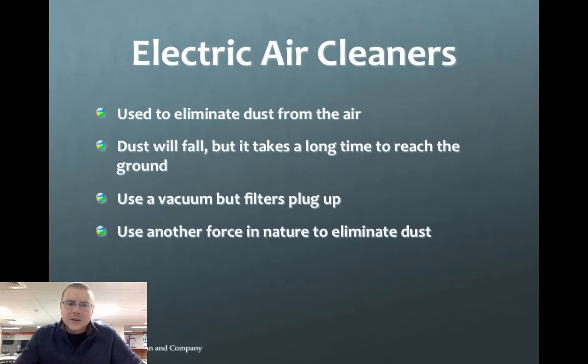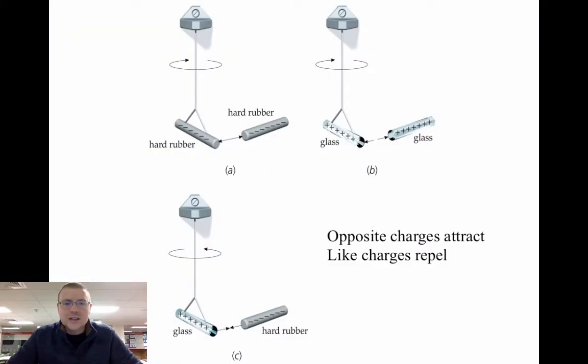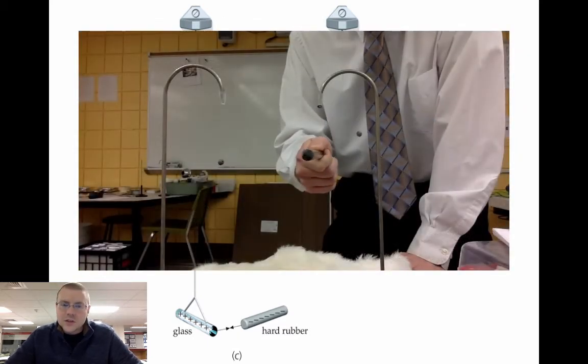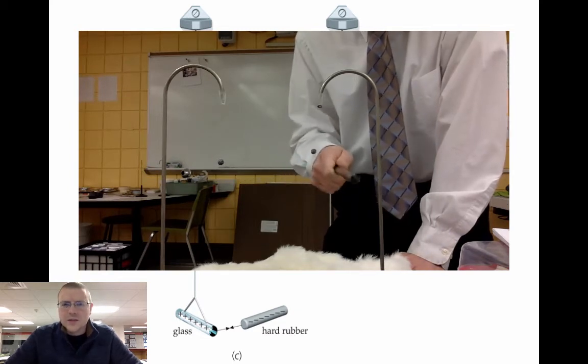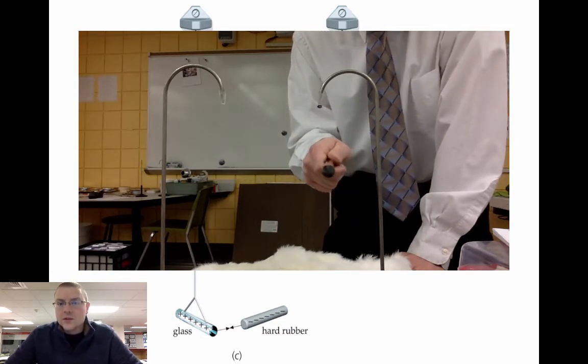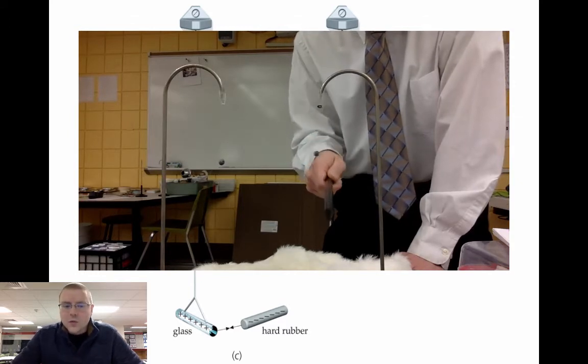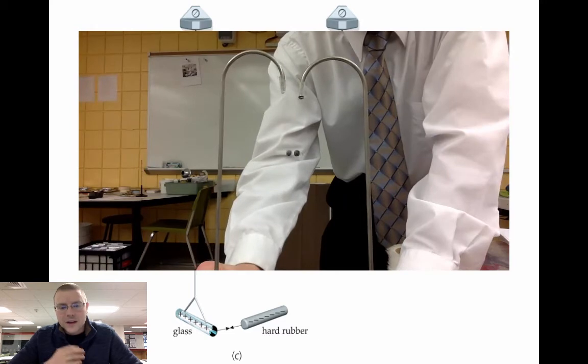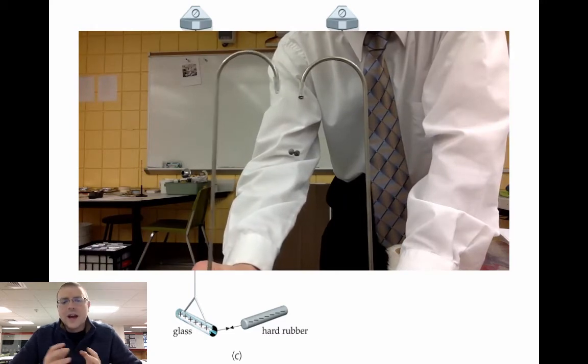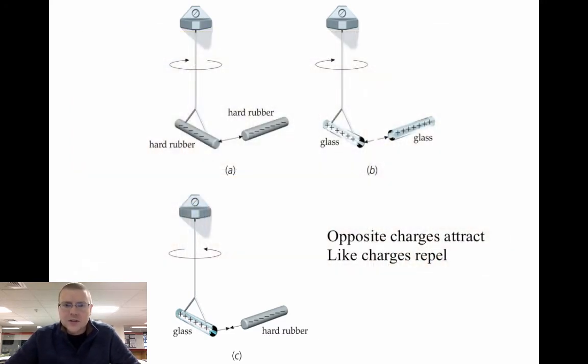So there's got to be another way. There's got to be another force in nature that we could use to eliminate dust. What we can do is use electric charge. Like we saw in the demonstrations in class, there are two types of charges in the world. There's positive charges and negative charges. Two negative charges will repel each other, so you can make two dust particles negative. Or you can make two dust particles positive. They would also repel each other. Or you could have one dust particle being positive and something else being negative, and those two would attract because opposite charges attract.